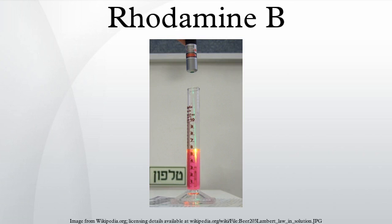Rhodamine B is tunable around 610 nanometers when used as a laser dye. Its luminescence quantum yield is 0.65 in basic ethanol, 0.49 in ethanol, 1.0, and 0.68 in 94% ethanol.